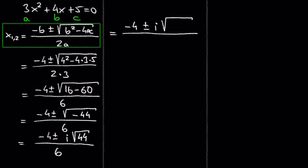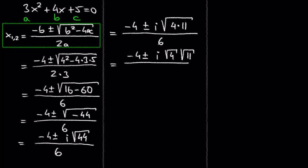The 44 we can write as 4 times 11, and then split the radical to the square root of 4 times the square root of 11. The square root of 4 is 2.